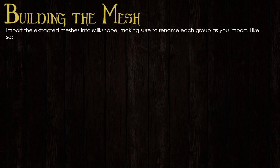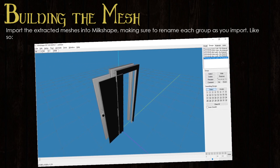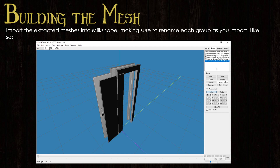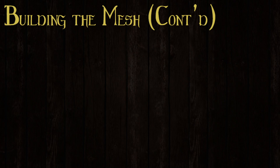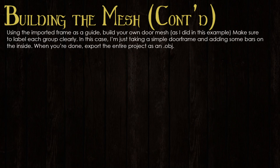Building the mesh: import the extracted meshes into Milkshape, making sure to rename each group as you import. You can see I have named all of the different parts — the handles, the doors — and make sure to label each side North and South. Then, using the imported frame as a guide, build your own door mesh. Make sure to label each group clearly. In this case, I'm just taking a simple door frame and adding some bars on the inside. When you're done, export the entire project as an OBJ.